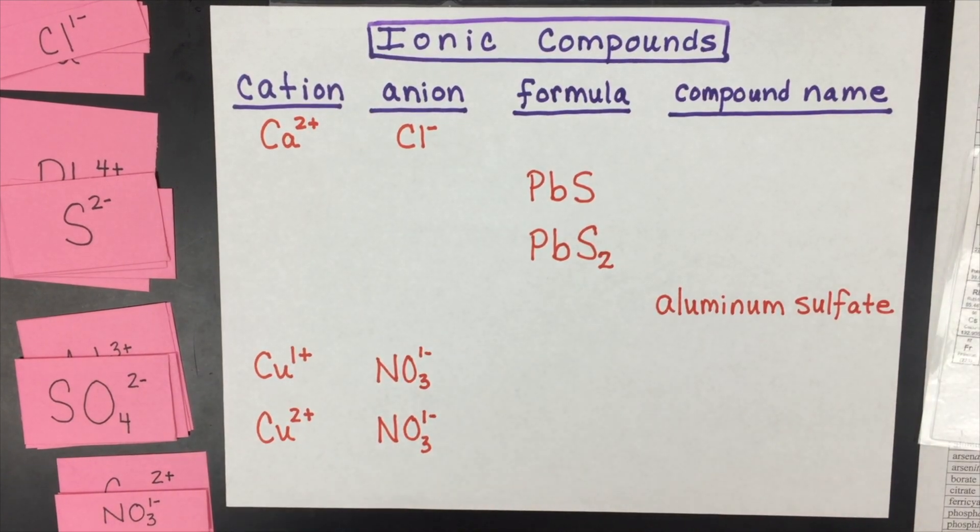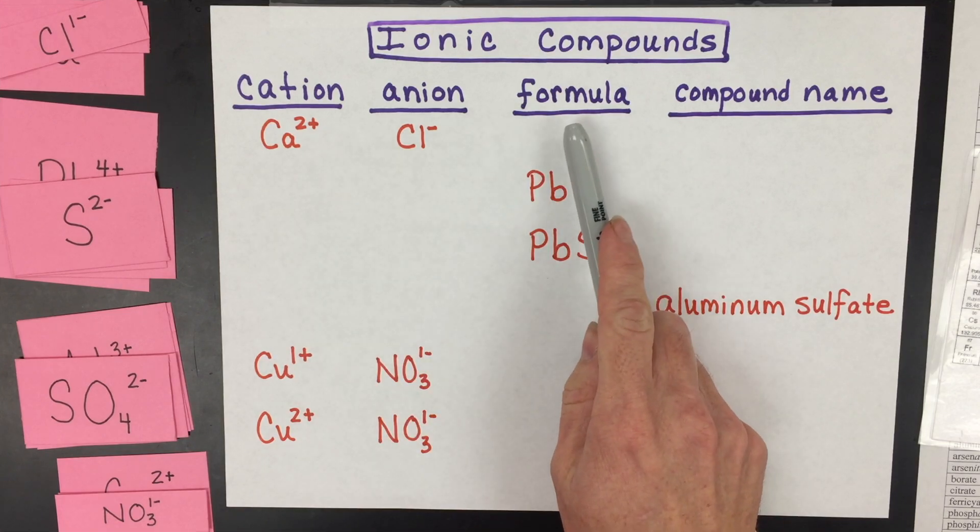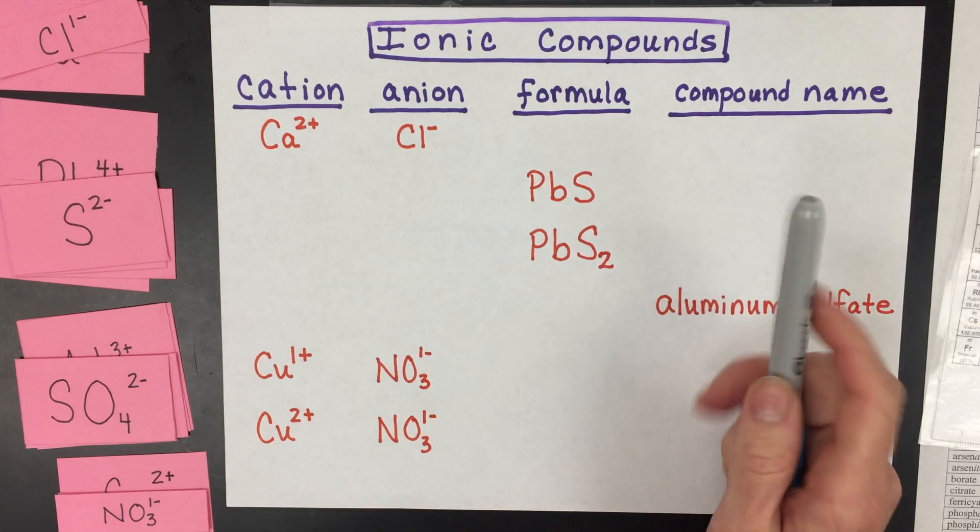Naming and writing the formula for ionic compounds is a very important skill to have in chemistry, especially before you start to write chemical equations and predicting products of those equations. We're going to go through how to write ionic compounds. I'm going to go through how to write the formula and name the compound.